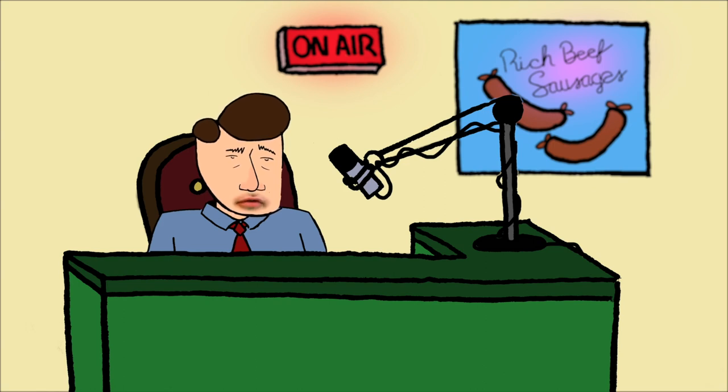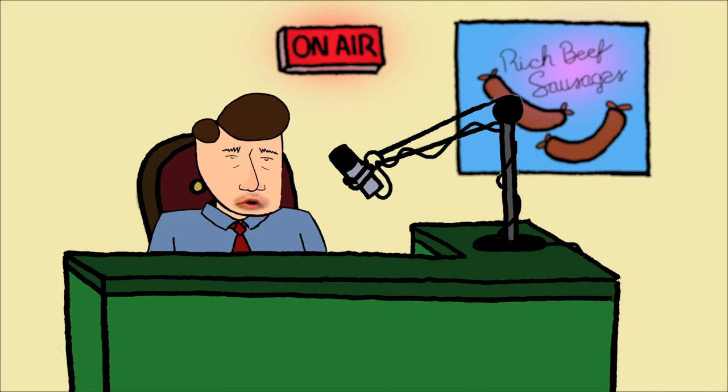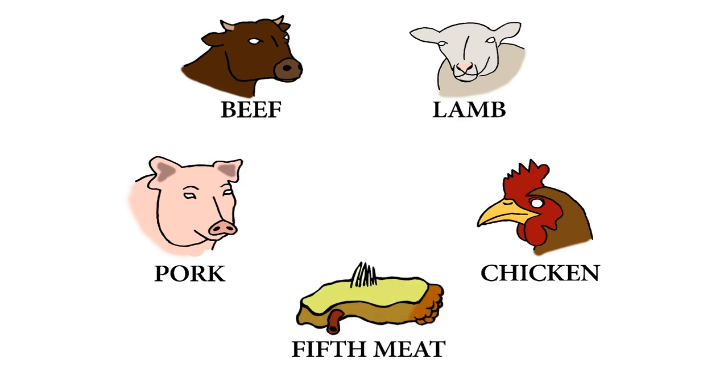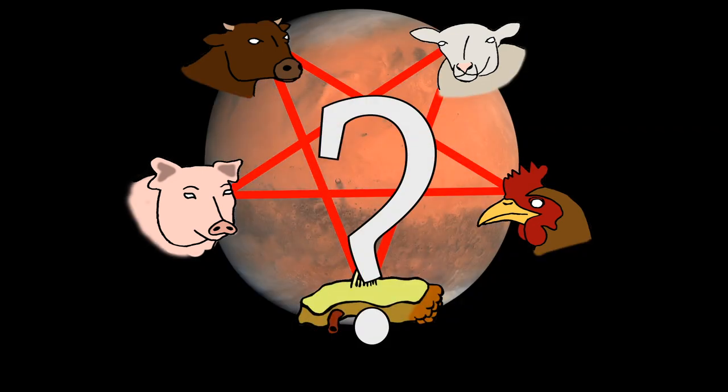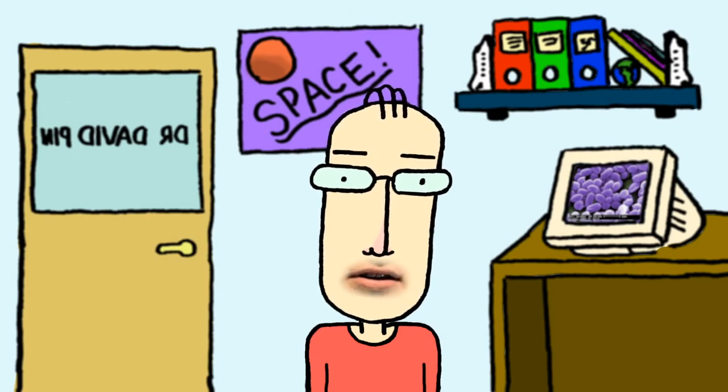A fifth meat? Yeah. So currently we have the four meats: beef, lamb, pork, and chicken, but I wonder whether you could find a fifth meat on a different planet. Mike, if you find lots of microbes you could probably make some sort of tofu out of them, but we're not looking for a fifth meat. That's not what this is.